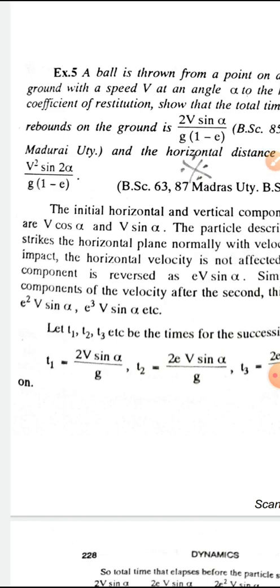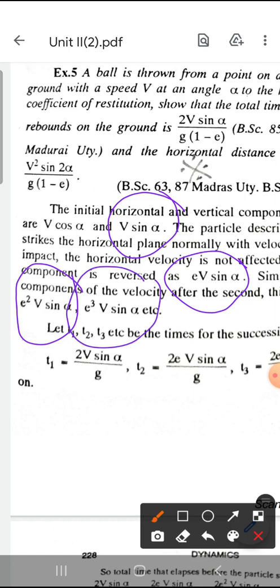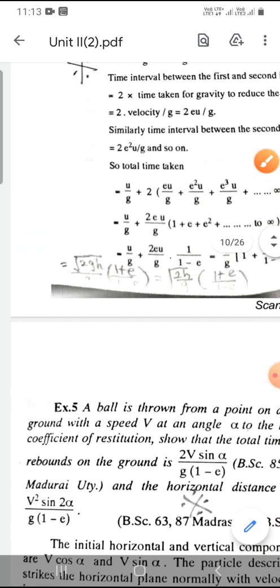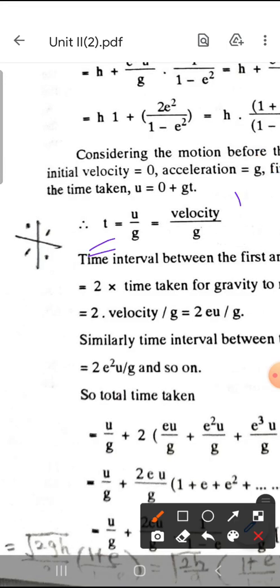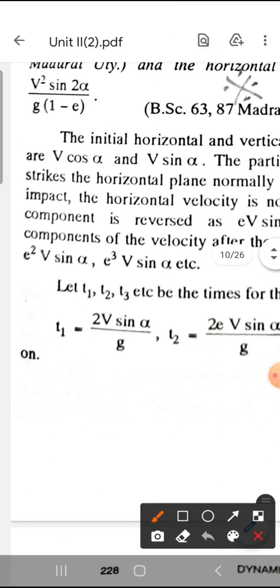Similarly, this is the first impact. The vertical component after the first impact is e·v sin alpha. After the second impact it is e squared·v sin alpha. And after the third impact it is e cubed·v sin alpha.